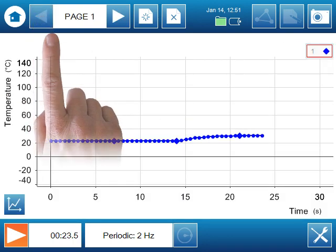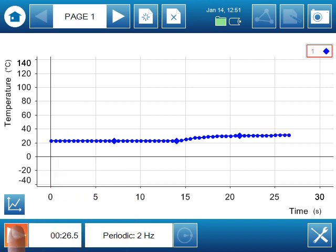I can stop collecting this first run of data by touching the orange stop button in the lower left of the screen. We can just barely detect the change in temperature because of the large scale of our graph.